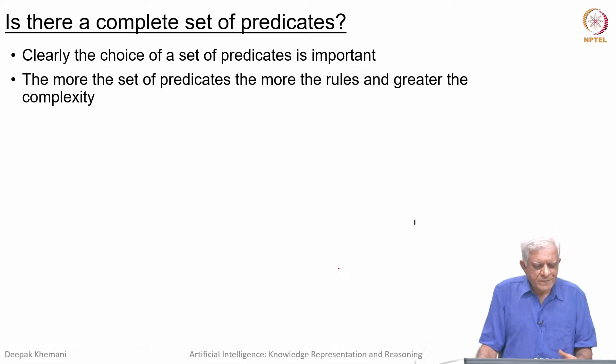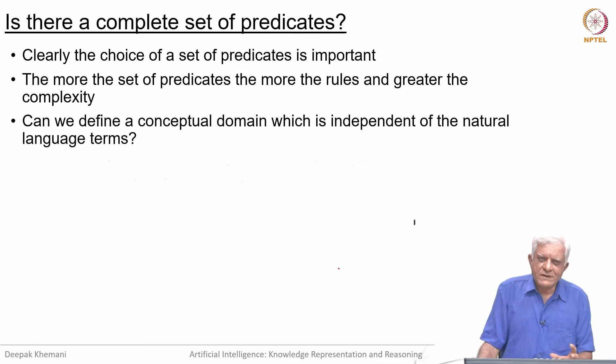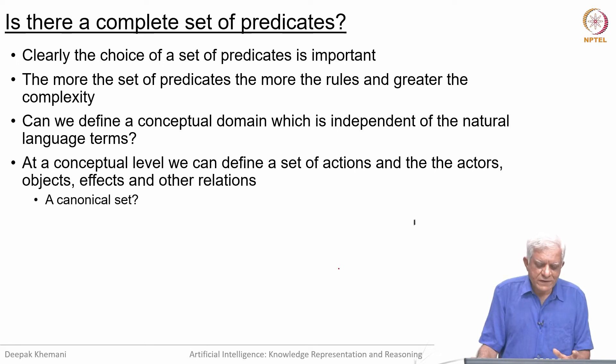Clearly, the choice of predicates is important. The more predicates, the more rules and the greater the complexity. Can we define a conceptual domain which is independent of natural language terms? People do this to some extent by building what are called ontologies, for medicine or other domains. Our thinking should be along those lines: in some domain—whether it is a football match, a bridge game, or classroom scheduling—you define a vocabulary to deal with those things. Can we have some conceptual level where we can define a set of actions, actors, objects, effects, and other relations? Some sort of canonical set?